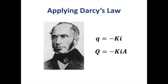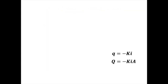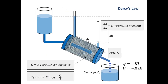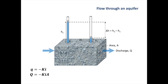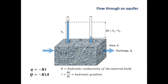Let's see how Darcy's law is applied in the real world. This was our experimental setup — let's change that to something that looks more like the real world, because Darcy's law applies in the real world as much as it does in the laboratory. Let's change that to look more like an aquifer and remind ourselves of the key parameters we need: the hydraulic conductivity of the aquifer, the hydraulic gradient, and the cross-sectional area through which the groundwater has to flow.